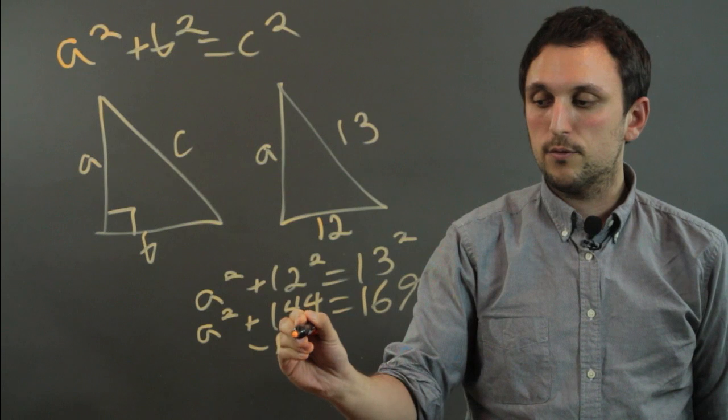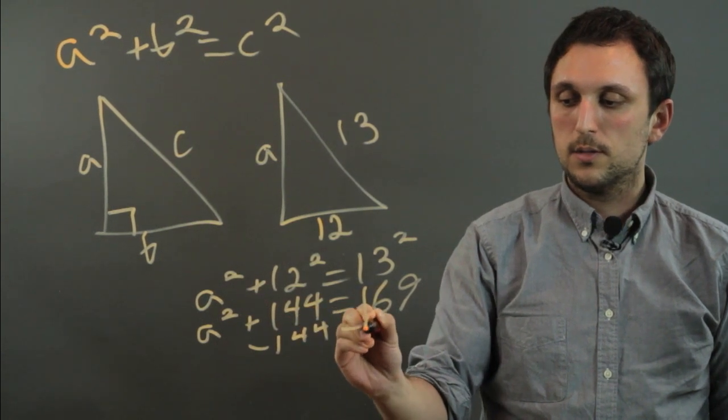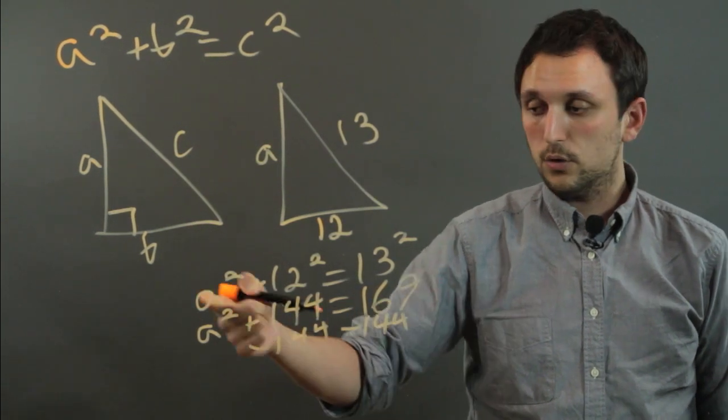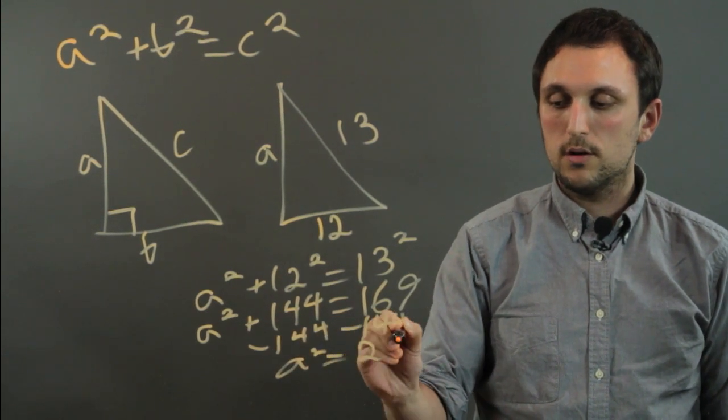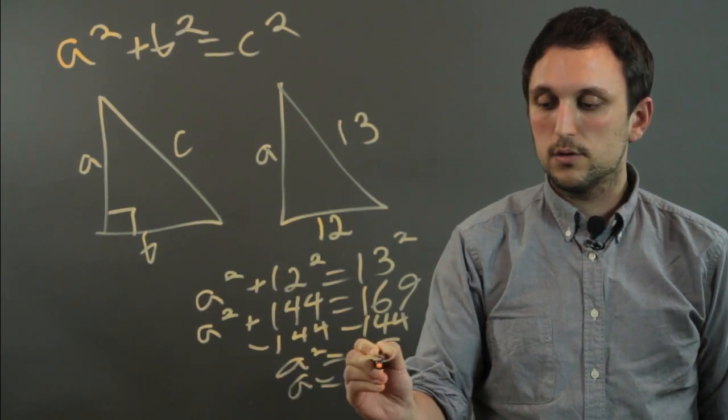So then we just subtract 144 from both sides, and whatever the result, we take the square root. So A squared equals 25. So A equals 5.